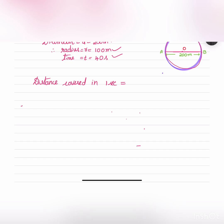Distance covered in 1 second will be equal to 200π, that is the total distance covered in 40 seconds divided by 40 seconds, and that is equal to 5π meters.